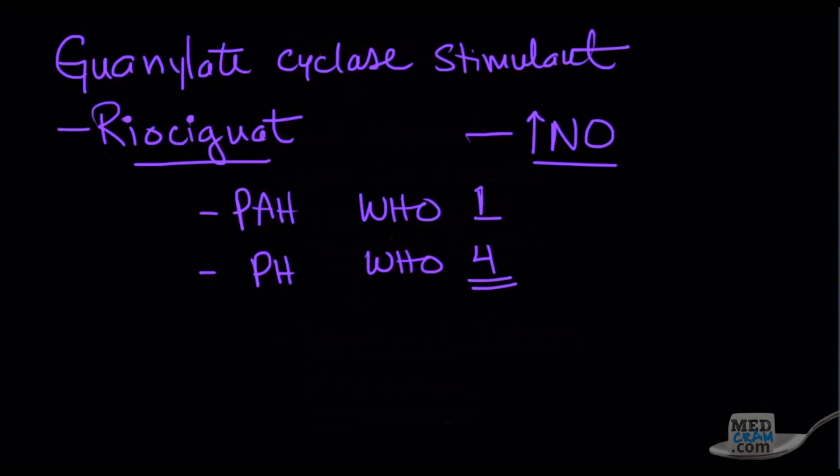So the key points, again, are that if you suspect somebody of having pulmonary hypertension, make sure that you classify them in the WHO group. If they are group one or four, there may be medication specifically designed for these types of diseases. If it is group two, you need to look at the underlying cause of the left heart disease and treat that. If it is three, you have to look at the underlying cause for the hypoxemia and treat that, whether it's lung disease or sleep apnea.